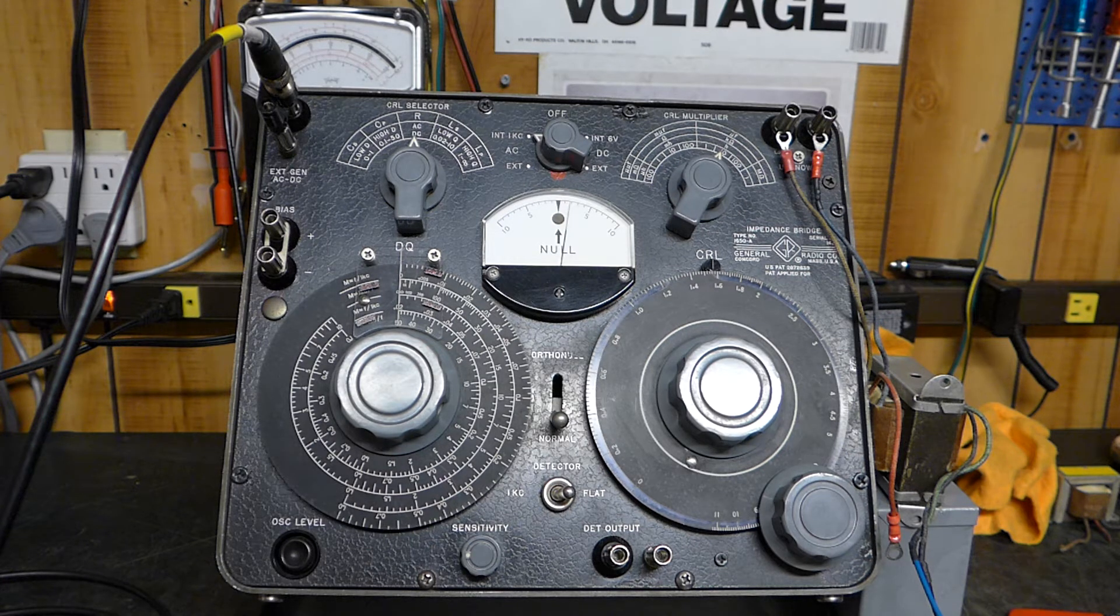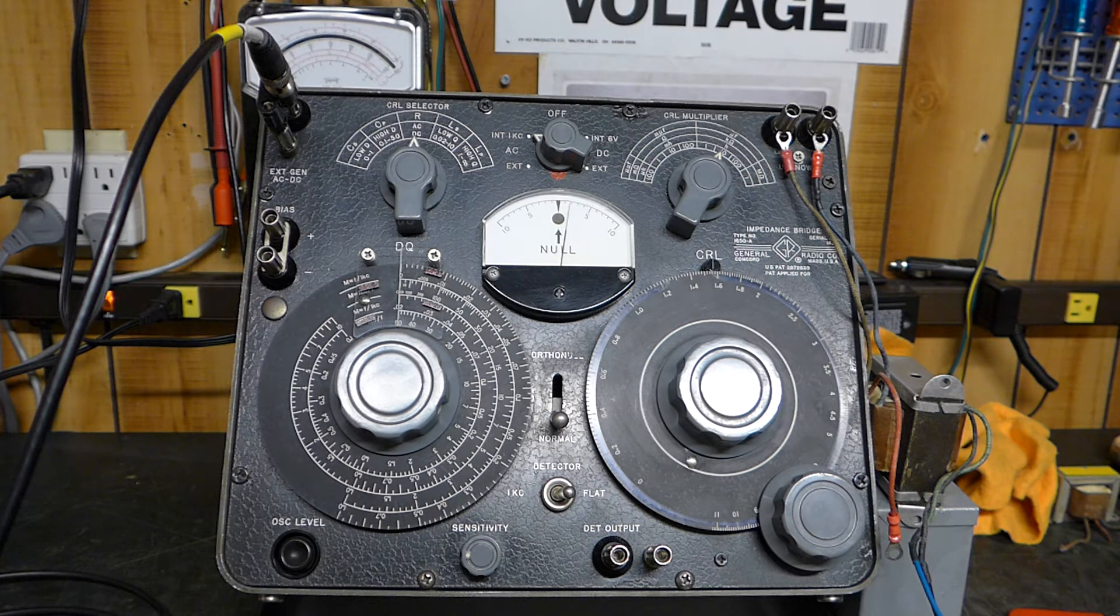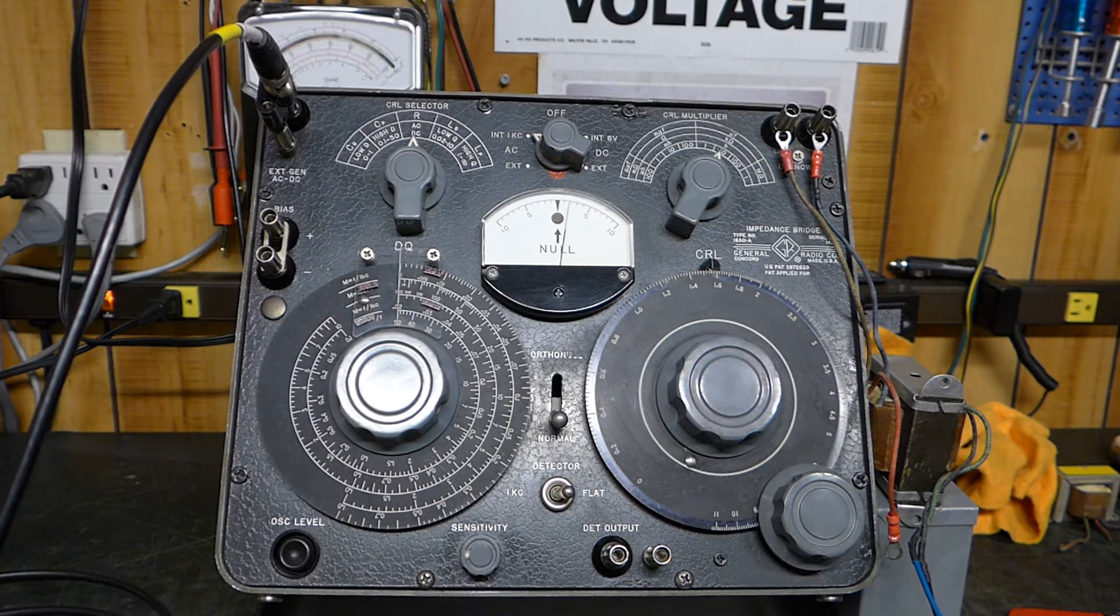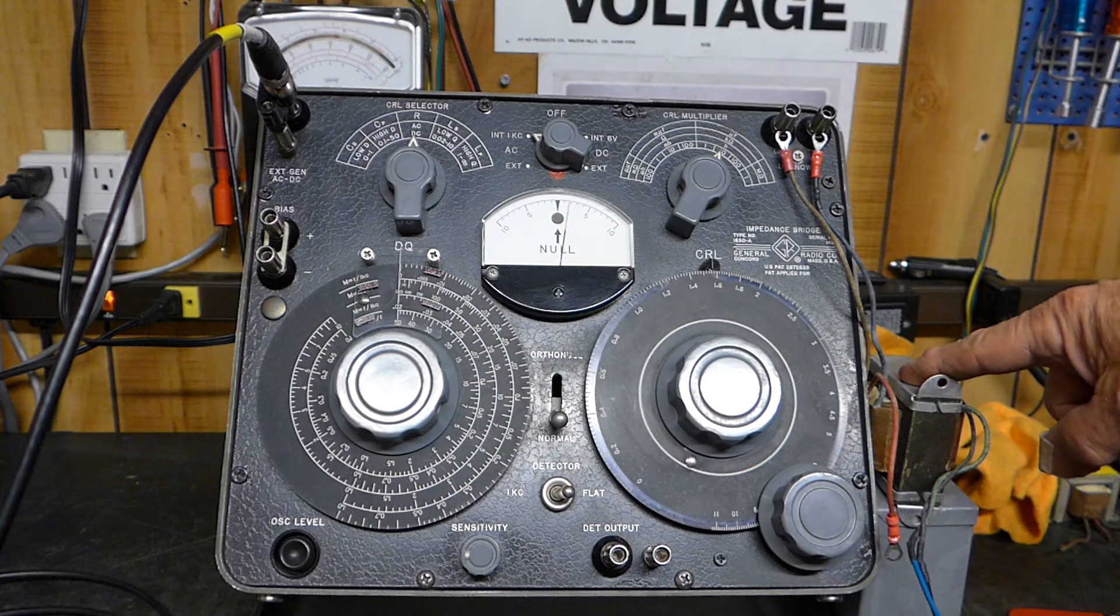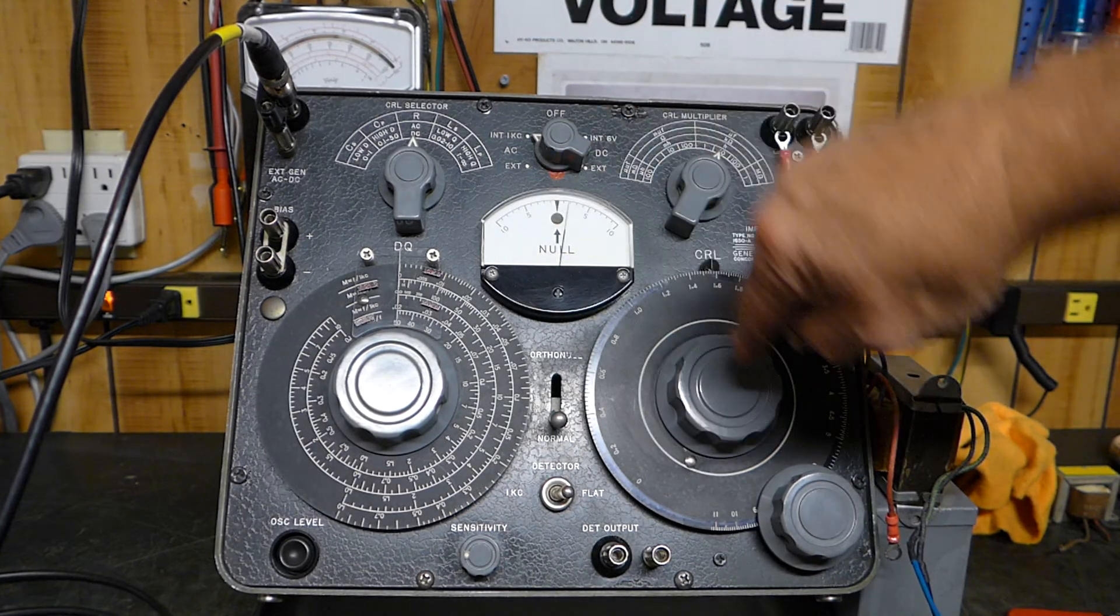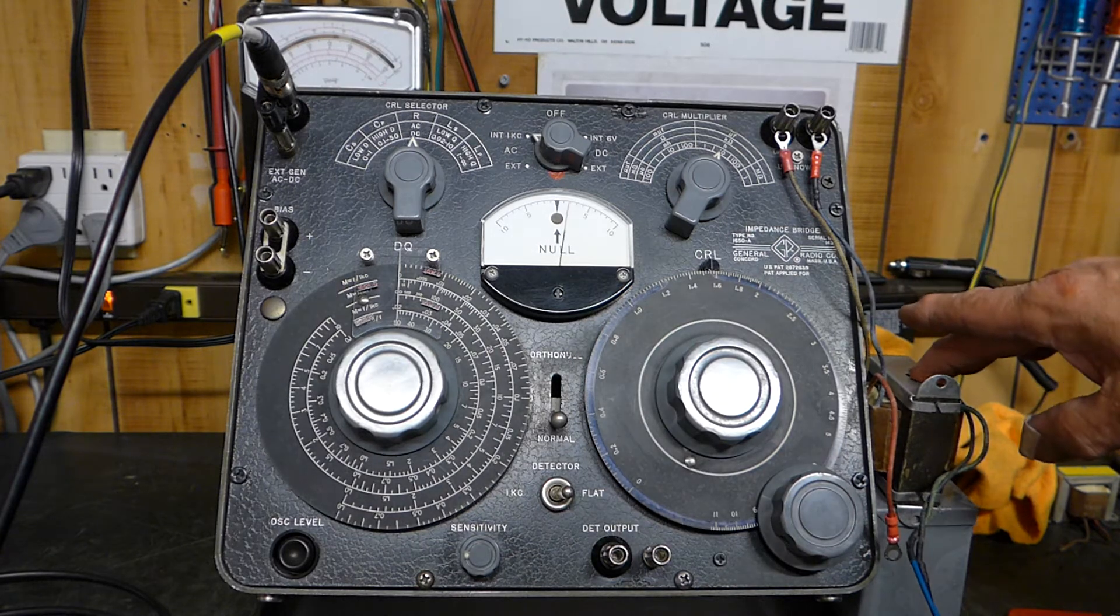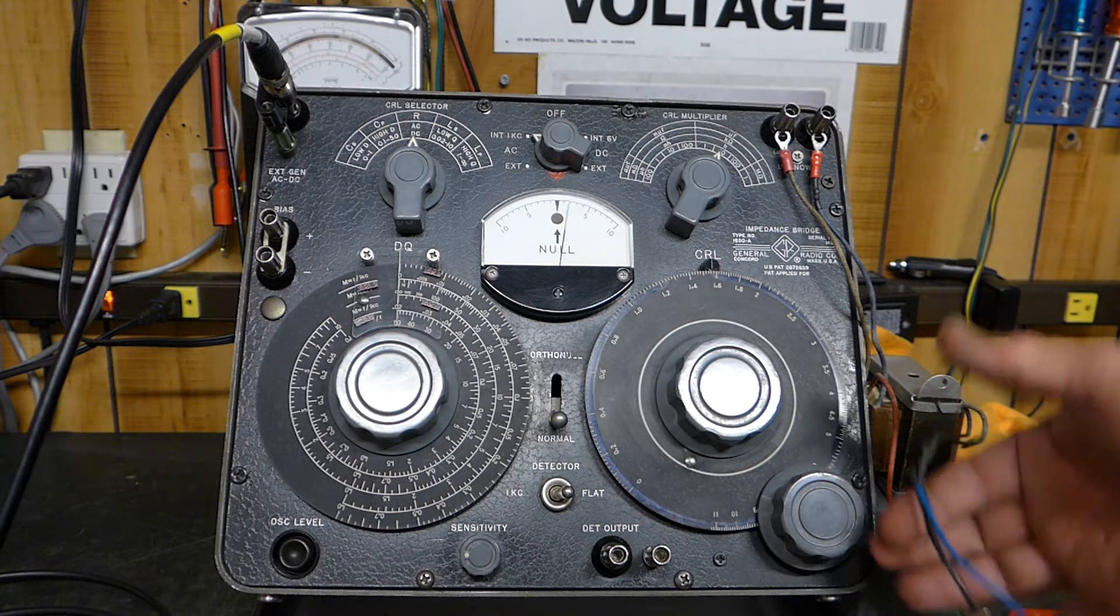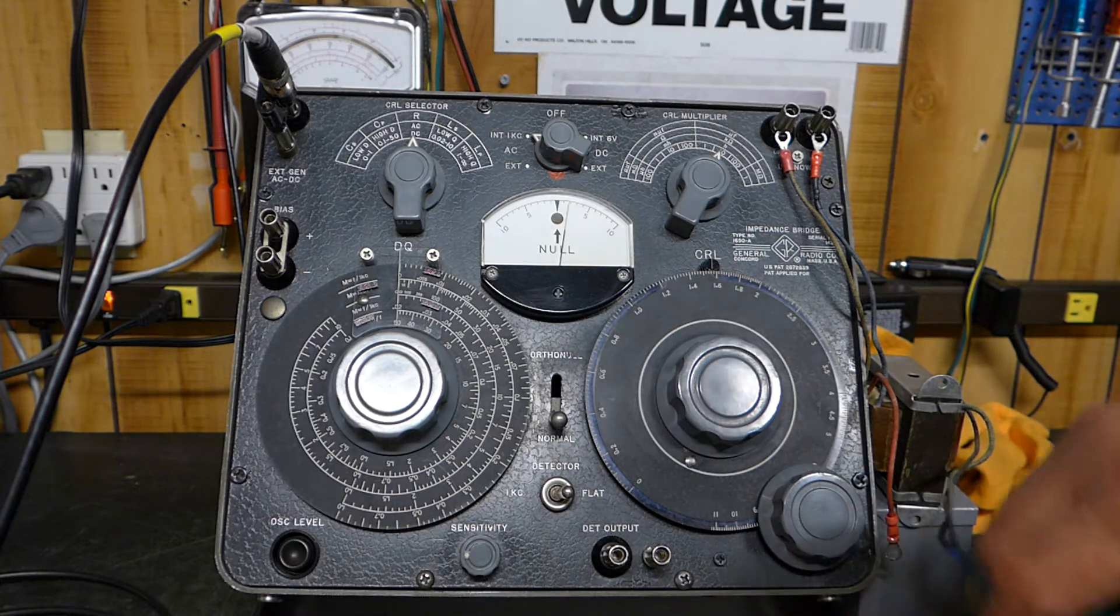So what I'm using tonight is an old General Radio 1650A impedance bridge, and it does a beautiful job. I think you'll like this - you actually get a reading. Okay, this transformer right here that I'm using, I'll zoom in here so you can see the details. This is that same transformer I used last night that would work nicely with a pair of push-pull 6V6s into a 4-ohm load.